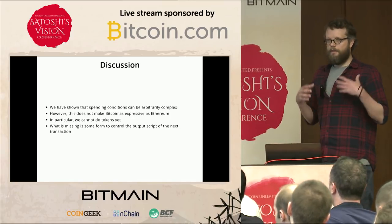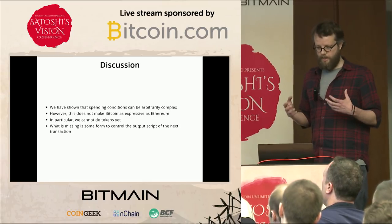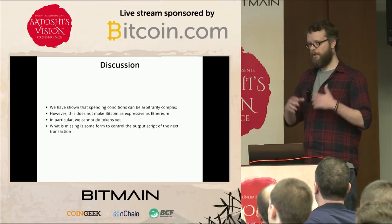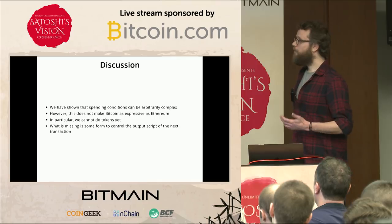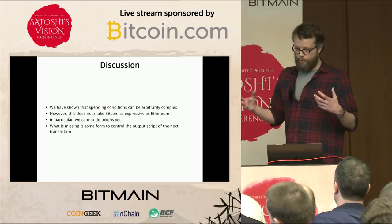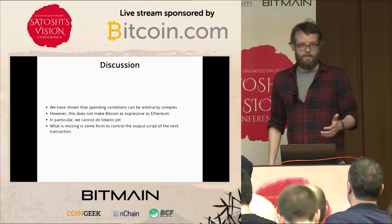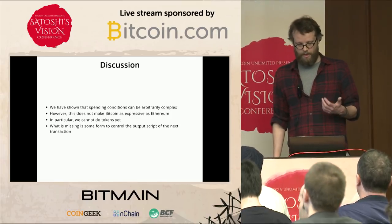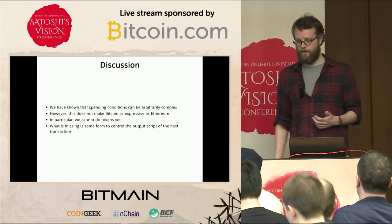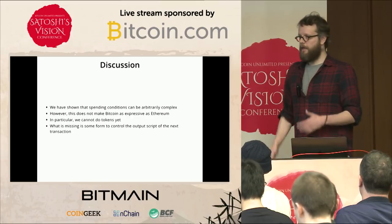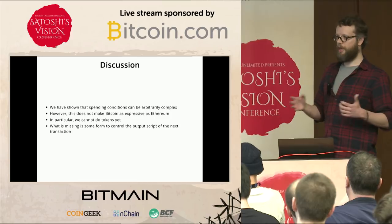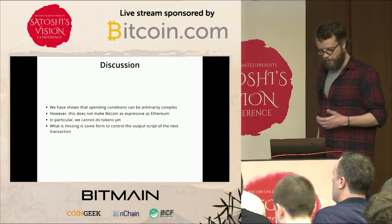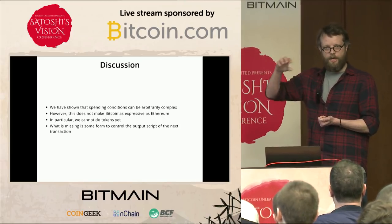To wrap up: we've shown that spending conditions in Bitcoin can be arbitrarily complex — I can say I will pay you if and only if a certain condition is true, and that condition can be as complicated as anything computable in any computer, any high-level programming language. However, there's a caveat: although Turing completeness captures everything that can be computed, something we cannot do right now is tokens. To do tokens we need to add something to Bitcoin — op group or Bitcoin covenants have been discussed.